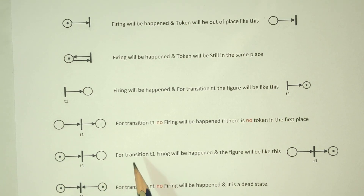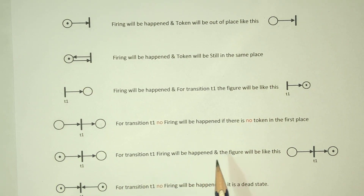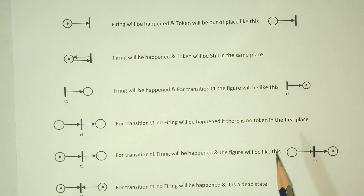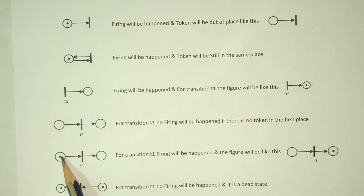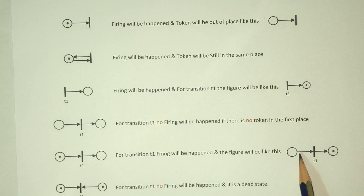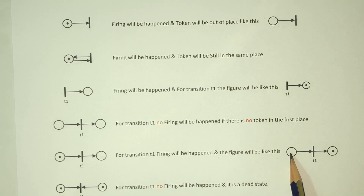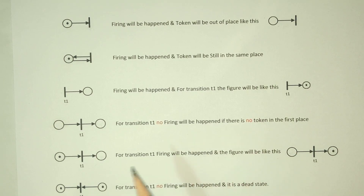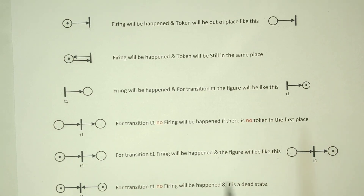For the transition T1, firing will happen, and the figure will be like this. To create a token, it will go to the place. The token is not there, but because the token is not, it will be there. The token will be there.